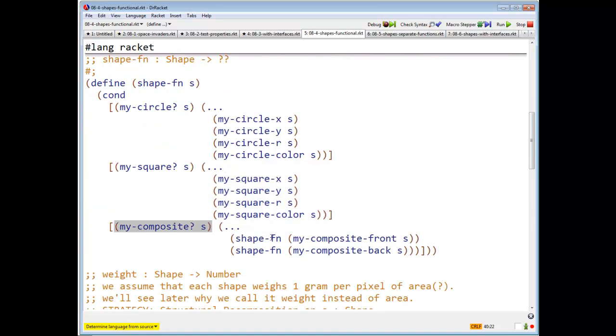And if it's my composite, well, it's going to be some functional combination. But of course, there's a recursive call here. So it's the result, it's a some function combination of the result of calling the shape function on the front of the shape and on the back of the shape.